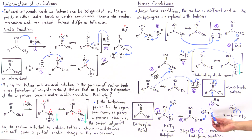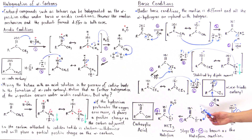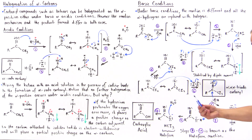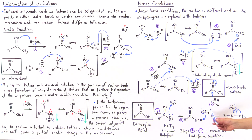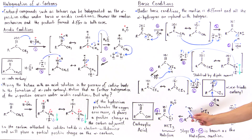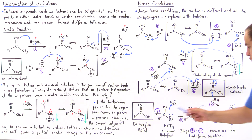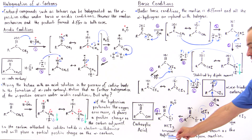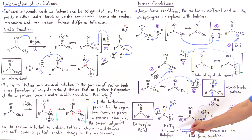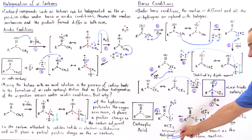Why does this carbanion form? It is stabilized because the carbon bears a negative charge but also contains three electron-withdrawing groups, so the charge on this carbon is not a full negative charge — it is slightly less. We see that it is stabilized by those electron-withdrawing groups. We now have a carboxylic acid. This carboxylic acid is a very good Lewis acid, so it takes off the hydrogen attached to this oxygen, forming the carboxylate as well as the haloform. Because our halogen is iodine in this case, this is iodoform.